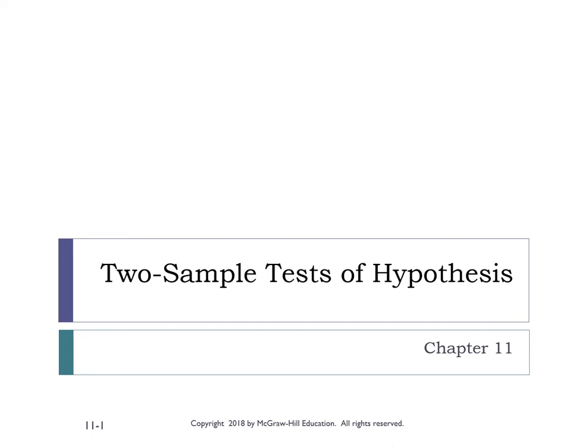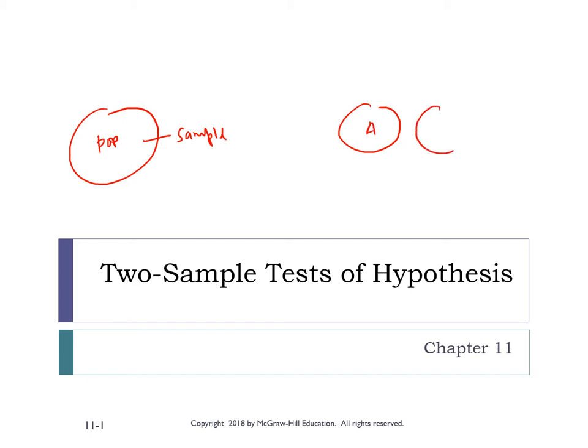Let's start with our new lesson on two-sample tests of hypothesis. In the previous chapter we learned about one-sample tests, where we have one population and select our sample randomly from it. Two-sample tests is just the extension of what we have learned before. In the case of two-sample tests we will have two different or independent populations — for instance, population A and population B — and we want to know whether these two populations have the same mean.